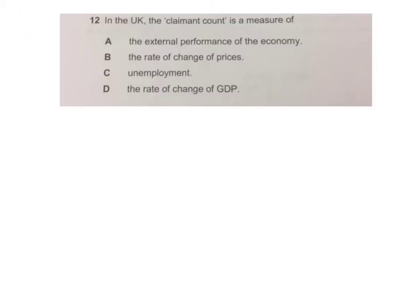This one's so easy I'm not going to waste your time on it. We know the claimant count is something to do with unemployment, so the answer is C. The other measure of unemployment is the ILO, or the labour force survey.